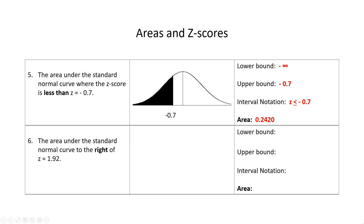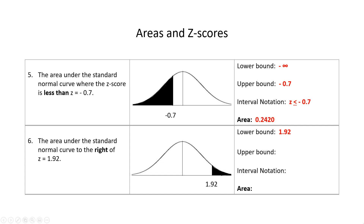Number 6: find the area to the right of z equals 1.92. We have a positive z and we want the area to the right, so from the picture this must be less than 50%. The lower bound is z equals 1.92 and the upper bound is positive infinity; interval notation is z greater than or equal to 1.92. We do 1 minus what's in the table and get 0.0274, which agrees with our picture.